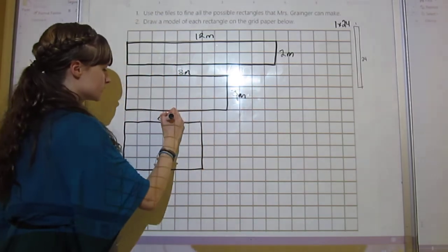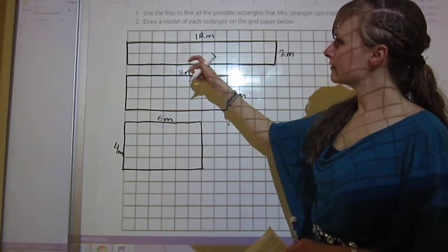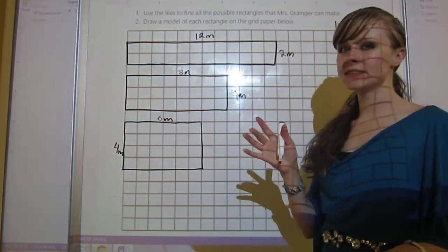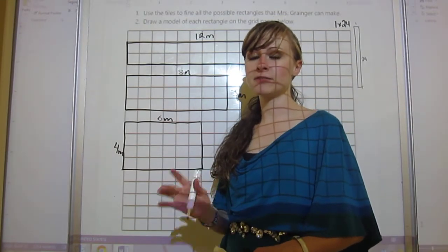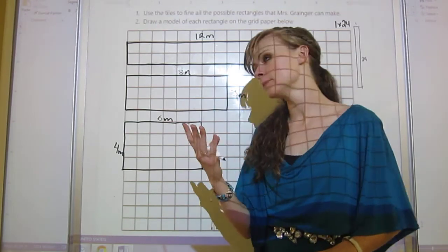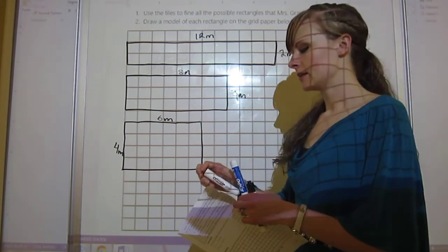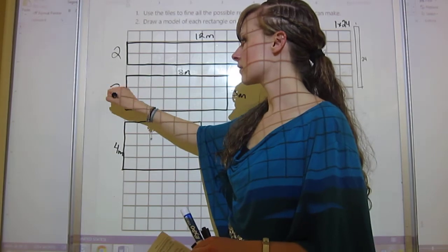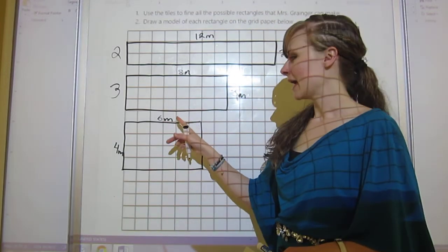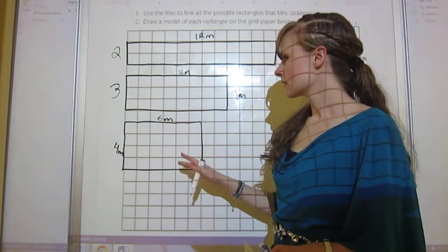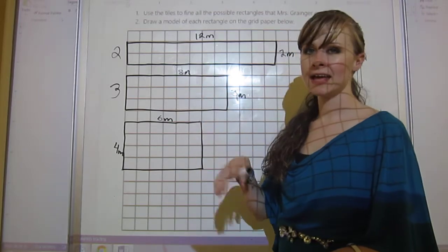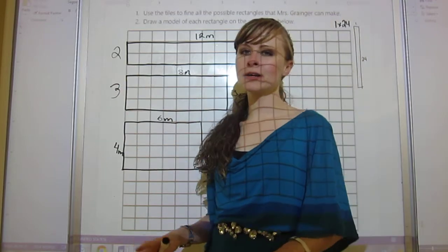Now I've got 1, 2, 3, 4. Can I multiply anything by 5 to get 24? No, I can't, because 5 times 5 is 25, so that's too much. So the total possible rectangles that Mrs. Granger could make is 4. You'll notice I started at 1, then I went to 2, then 3, then 4. I know to stop after 5 because if I get to 6, I've already got 6 here. If I did 6 down and 4 across, that's exactly the same thing.